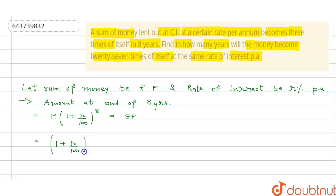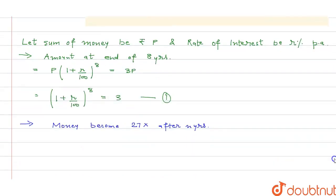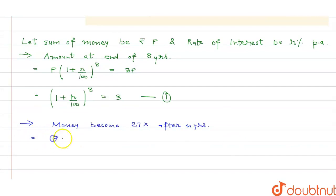Now the money becomes 27 times P after n years. That means P(1 + r/100)^n = 27P, which equals (1 + r/100)^n = 27.